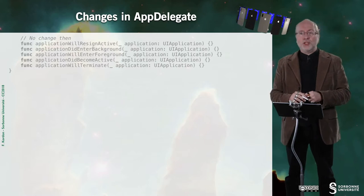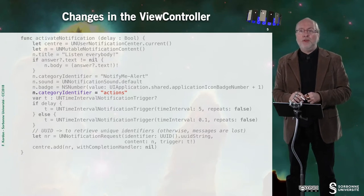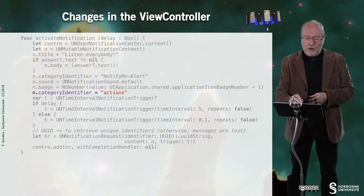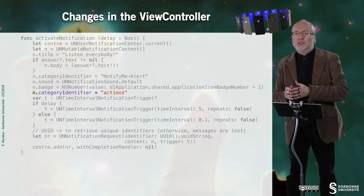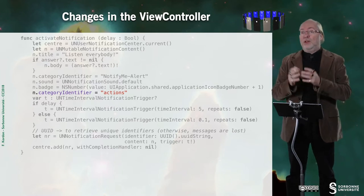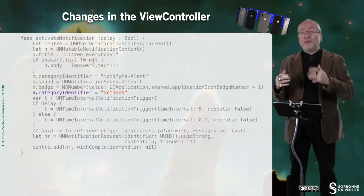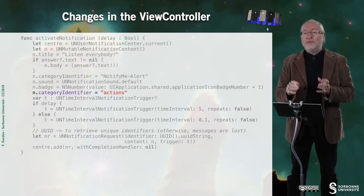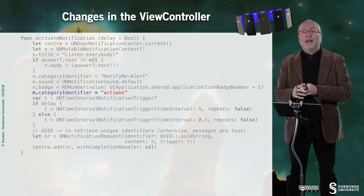There are even fewer changes in the ViewController. The only change is when you activate and create a new notification — you have to associate to the notification a category identifier called 'actions'. Otherwise your actions will not be connected to this notification. You can imagine having a panel of actions according to the type of notifications you have, and by selecting the appropriate identifier — 'actions', 'toto', or whatever — you select the appropriate set of actions.